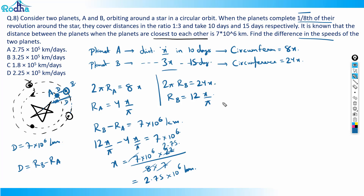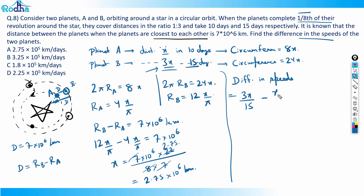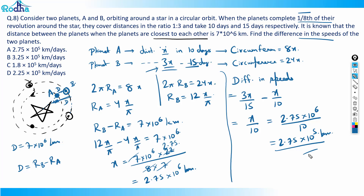Now finding the difference in speeds: speed of planet A is x/10 and speed of planet B is 3x/15 = x/5. The difference is x/5 − x/10 = x/10. Substituting x = 2.75×10⁶ gives difference in speeds = 2.75×10⁵ km/day. That's the answer — option A is correct.